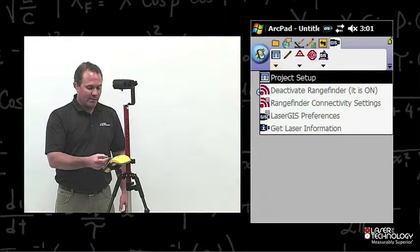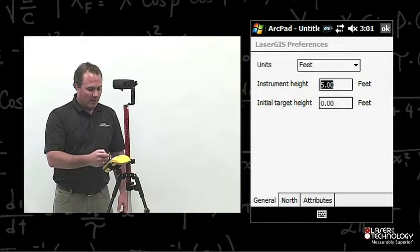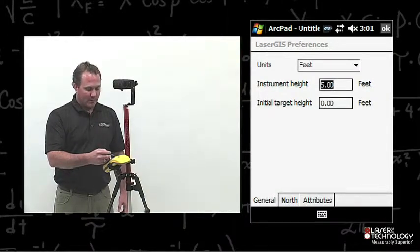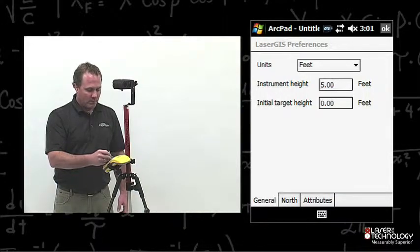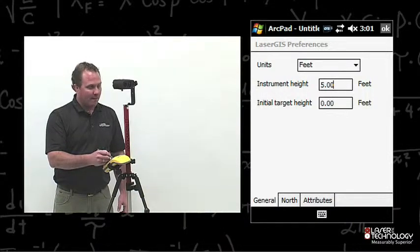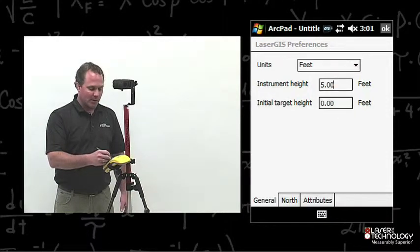From here, we want to go down to LaserGIS Preferences. Here we're going to be able to set up the units of feet, meters, or yards. We can set our instrument height. I'm going to use five feet, and we also use a target height. I'm going to set my target height at zero.